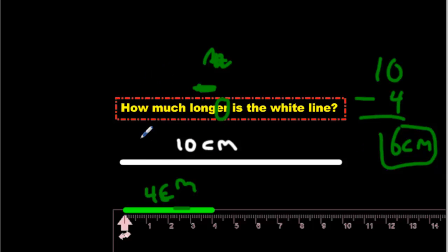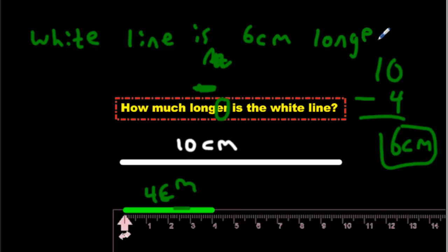And you're going to say that the white line is 6 centimeters longer. Longer than what? I'm not going to write it in, but you would say longer than the green line.